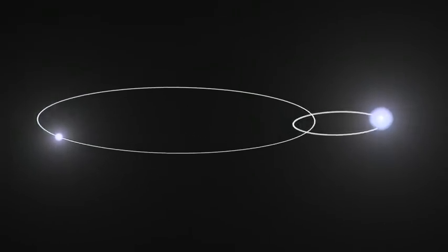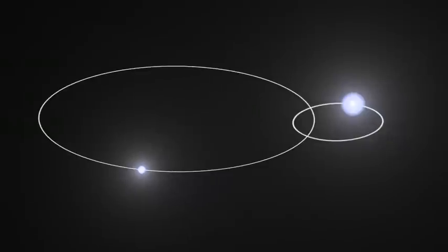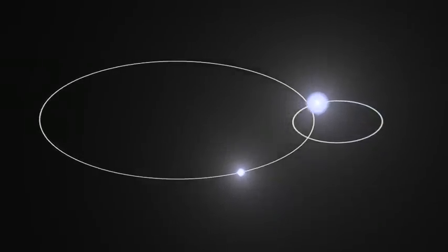The secondary's orbit is among the most eccentric known. Every five and a half years, when the two stars swing toward closest approach, or periastron, they come about as close to each other as Mars is from the Sun.